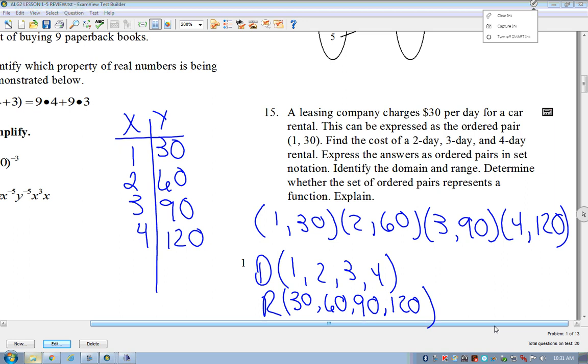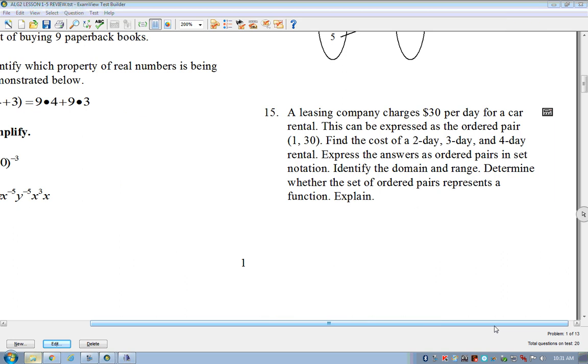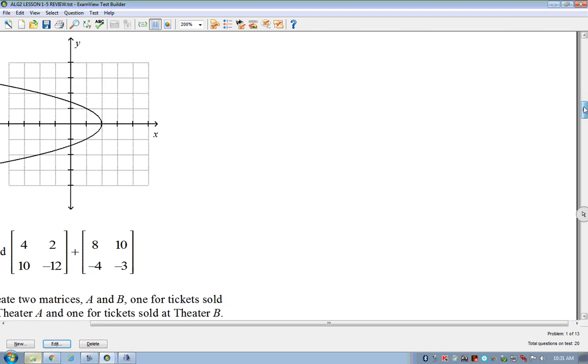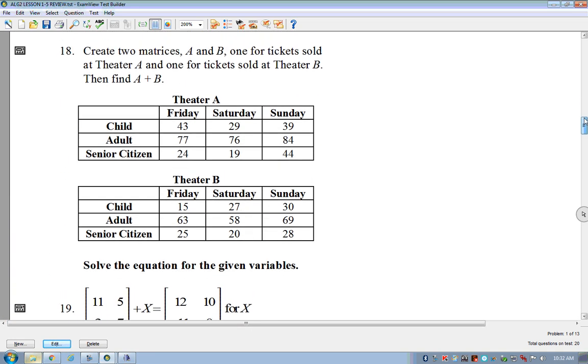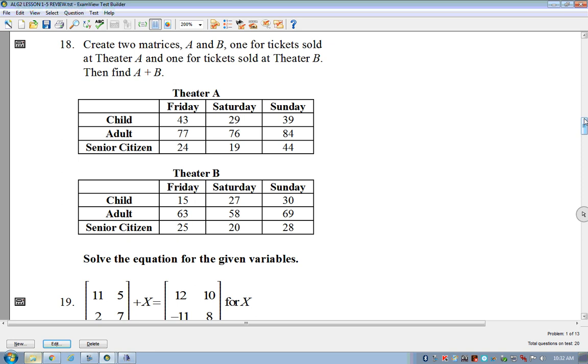Okay. Eighteen. Who's eighteen? Okay. Eighteen. Eighteen. Here we go. Create two matrices, A and B. One for tickets sold in theater A and one for tickets sold in theater B. Then find A plus B. All right. So I'm going to show you how to do this on, actually, we could probably just do this. This is matrix A. This is matrix B. So we have a three by three. We're adding a three by three.